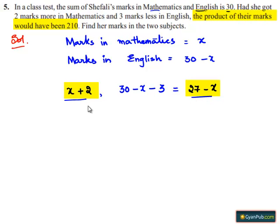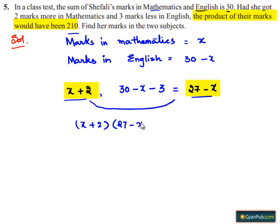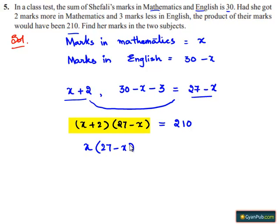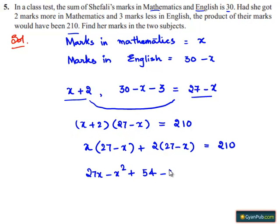So this product is equal to 210: (x plus 2) multiplied by (27 minus x) is equal to 210. Expanding: x times (27 minus x) plus 2 times (27 minus x) is equal to 210, giving 27x minus x² plus 54 minus 2x is equal to 210.